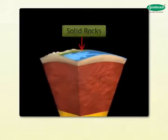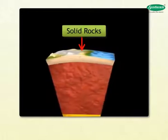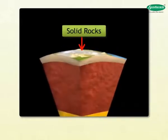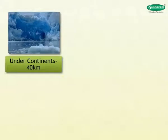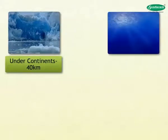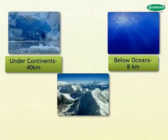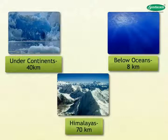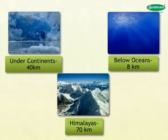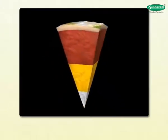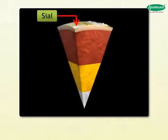The crust is made up of solid rocks and its thickness varies from place to place. It is about 40 kilometers thick under the continents, whereas it is about 8 kilometers below the oceans. In mountainous regions like the Himalayas, it is about 70 kilometers thick. The average thickness of the crust is 30 kilometers.